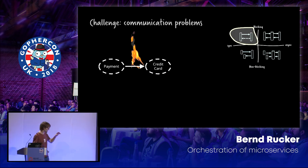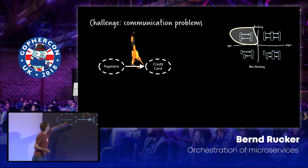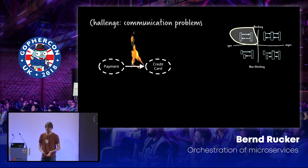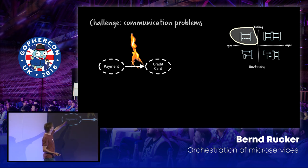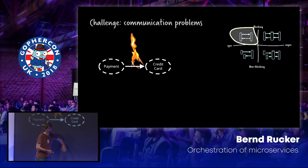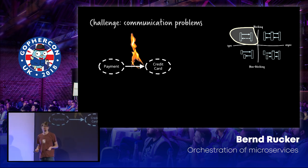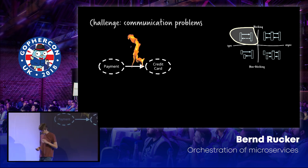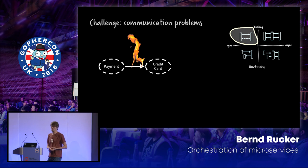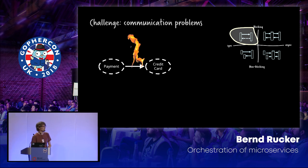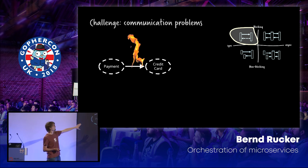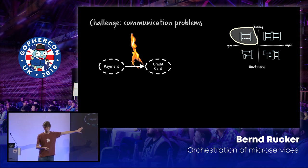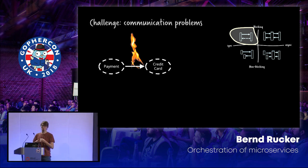Let's make an example. Let's assume I write a payment service, and it uses another upstream service for charging a credit card. If I do that with remote communication, I have to think about the situation when the network is not available. It might be a hiccup, it might be a longer outage. So the big question is: what do I do then?